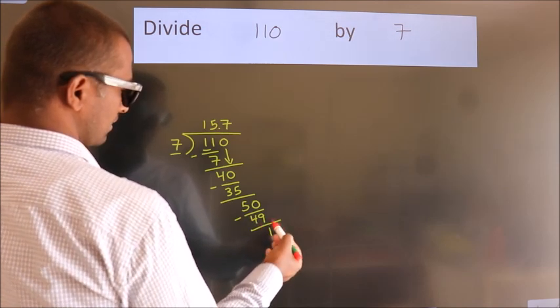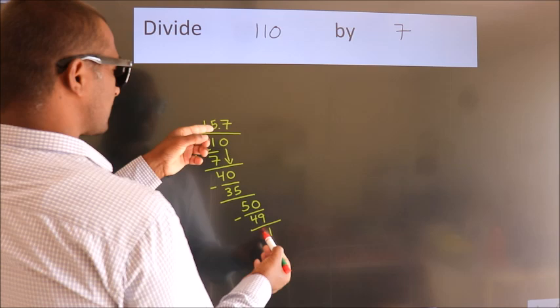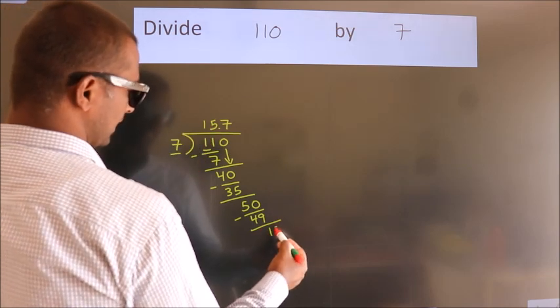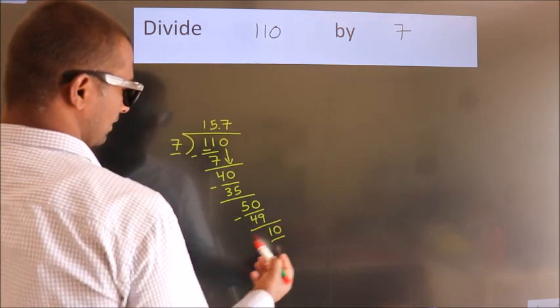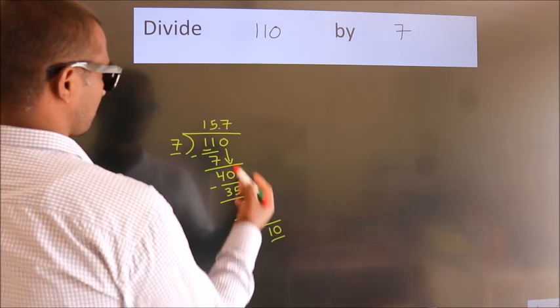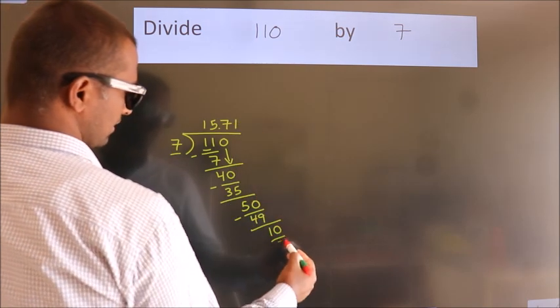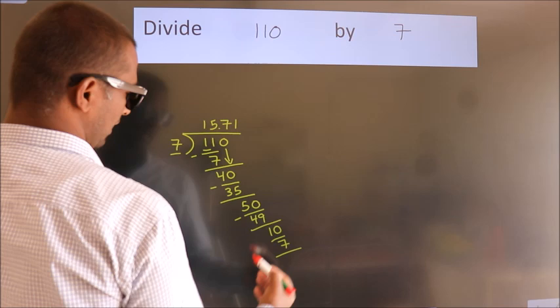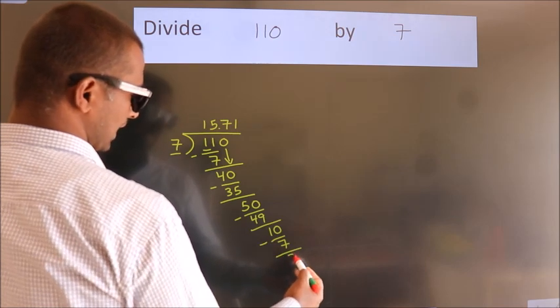After this, we already have the decimal. So directly take 0. So 10. A number close to 10 in the 7 table is 7 once 7. Now we subtract. We get 3.